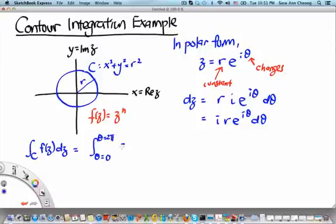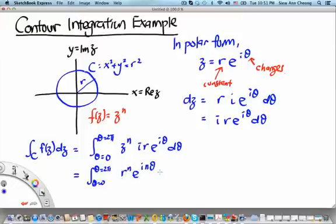And f of z itself is z to the n, and then dz is i r e to the i theta d theta, which can be written as integral from theta equals 0 to 2 pi of r to the n, e to the i n theta, i r e to the i theta d theta.